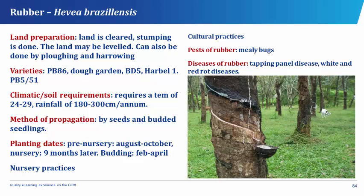The method of propagation of rubber is by seeds and budded seedlings. The pre-nursery of rubber is done around August to October, while the nursery is done nine months later and the budding is done February to April. Nursery practices include the pre-nursery, the nursery, and the planting. While the cultural practices involve weeding, mulching, pruning, and the planting of cover crops.